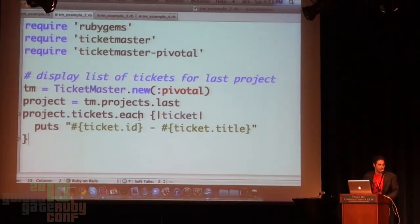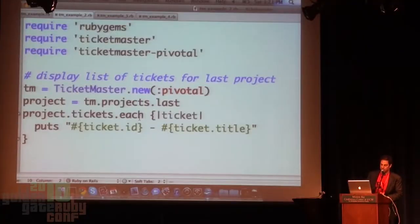What happens when you have multiple Lighthouse clients? You can set up a particular API key in a configuration file that's either per project or on your machine. Everything is already set up for whatever project management or ticketing system they happen to be using. Here's another simple example using Pivotal — just opening up the last project and iterating through all of the tickets, printing the ID and the title.